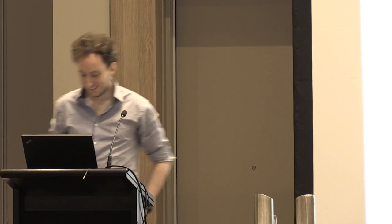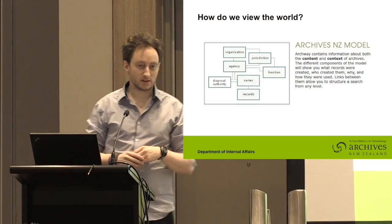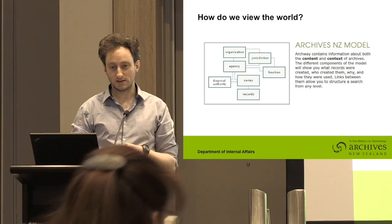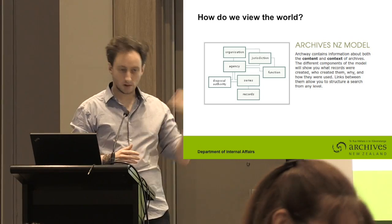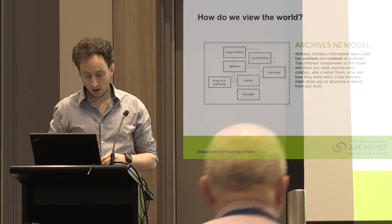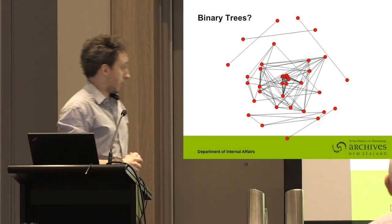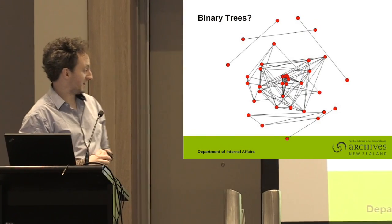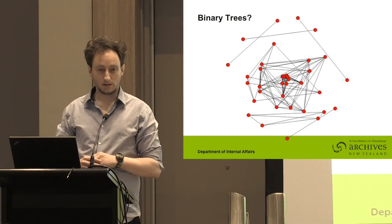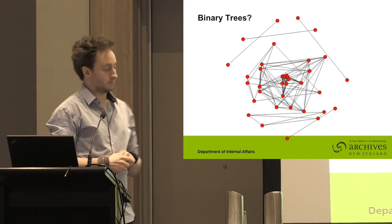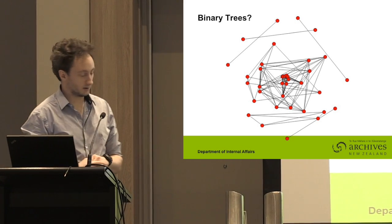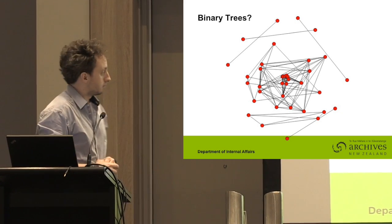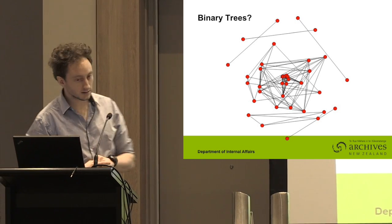Good afternoon everybody. So this is one view of the world. This is Archway — Archives New Zealand's item model, quite a high-level abstraction of it. This is my view of the world. Each dot on here represents a record, but each dot on here could also represent a person, a place, an agency.